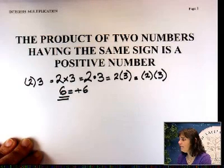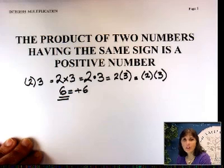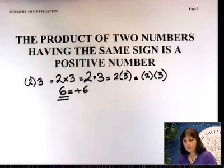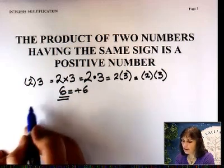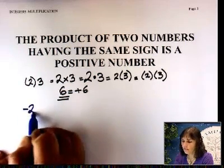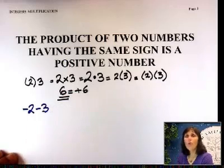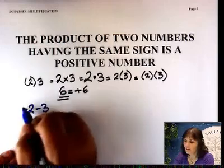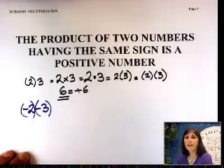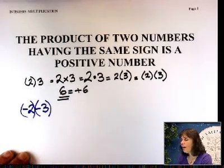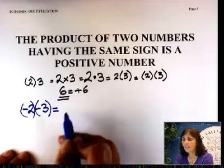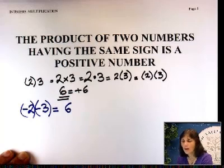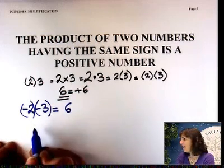Let's look at the same sign, but this time they're negative. When you have negatives, you have to put parentheses around them for sure. Because if you don't put parentheses — negative 2, negative 3 — without anything around them, that means you're just subtracting 3 from negative 2. When you put parentheses, that's a multiplication. The answer is they are both negative, so it's positive 6.